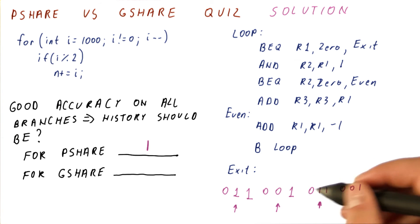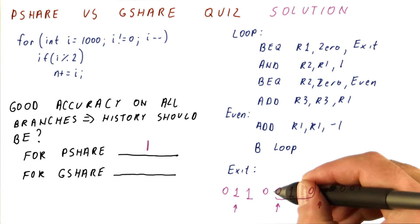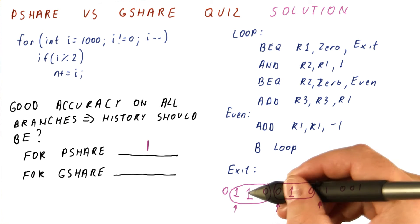We need this to be part of the history when we're predicting this, and so on. In order to do that, we need the history to contain at least this much, which is three bits. Similarly here, we need this to be our history, so it catches this bit.